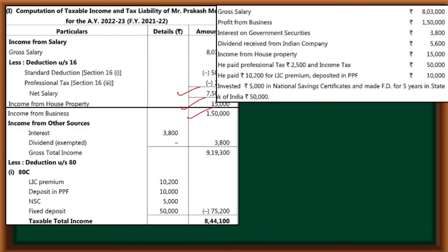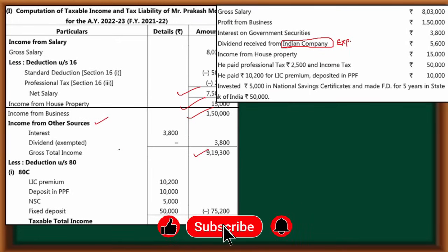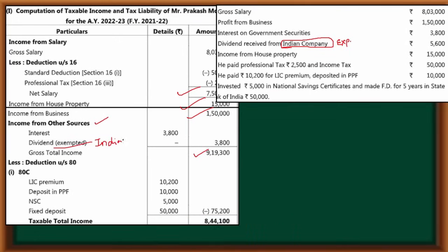Next, income from other sources — interest received is 3,800, so we have written that here. Then dividend is given — is dividend exempted? The dividend received from an Indian company is exempted. Keep this in mind: dividend from an Indian company is exempted. So this exemption is allowed. Gross total income is 9,19,300. The dividend was exempted because it came from an Indian company. If it were from a foreign company, it would be taxable. This is a small but important point — that's why I selected this problem.